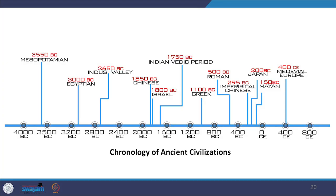Mostly in this period we see the record of many civilizations including Mesopotamia, Egyptian civilization, Indus Valley civilization, Vedic period, Chinese civilization, Israel, Greek and Roman civilization, Japan, Mayan, and medieval Europe. These civilizations had huge influence on the cities of today, and many innovations of that time we can see even today in our cities.